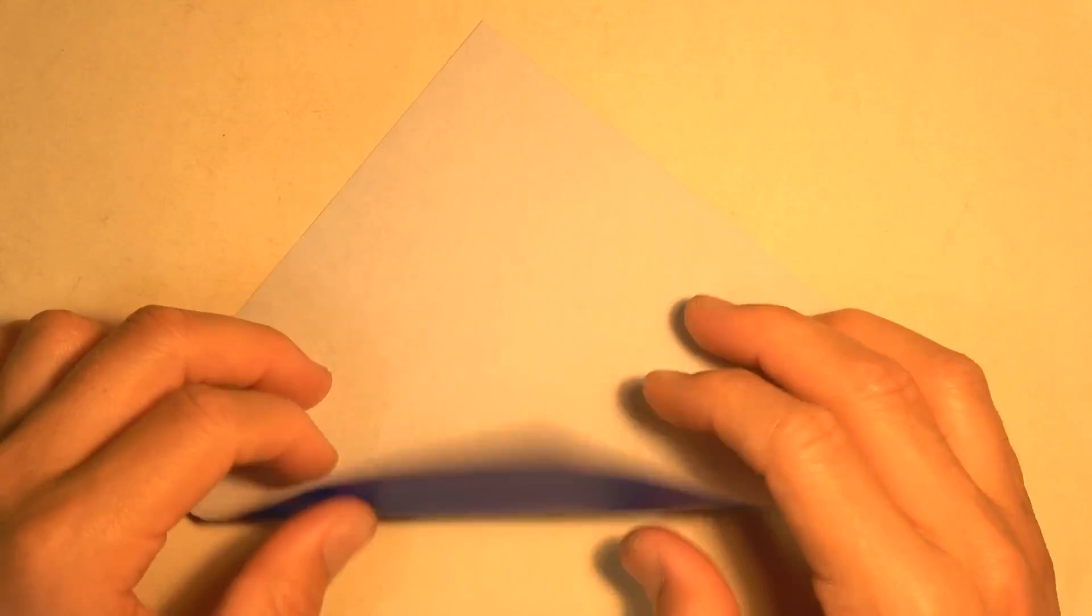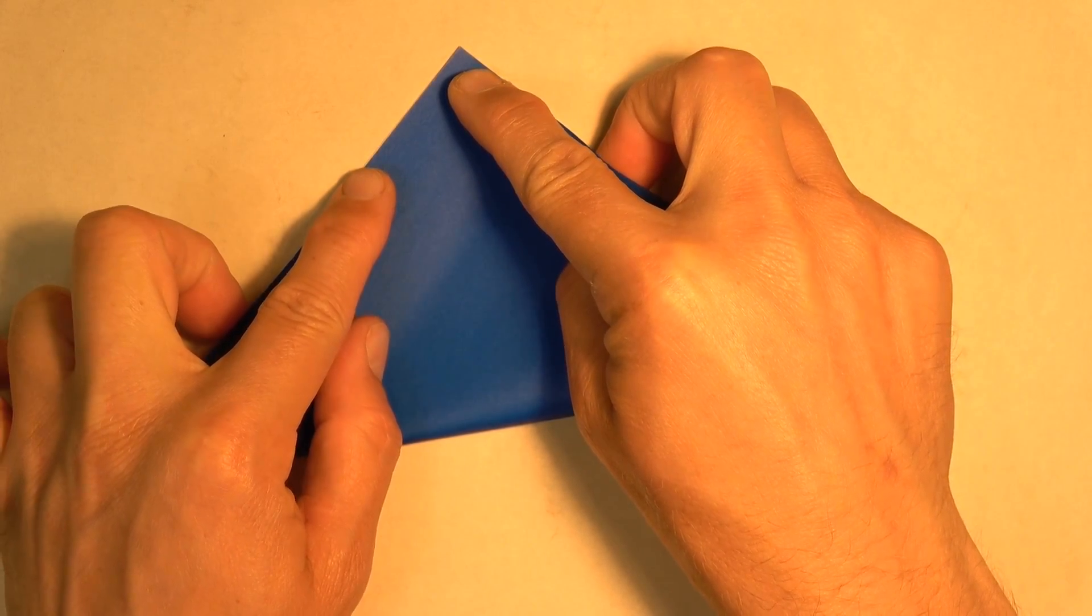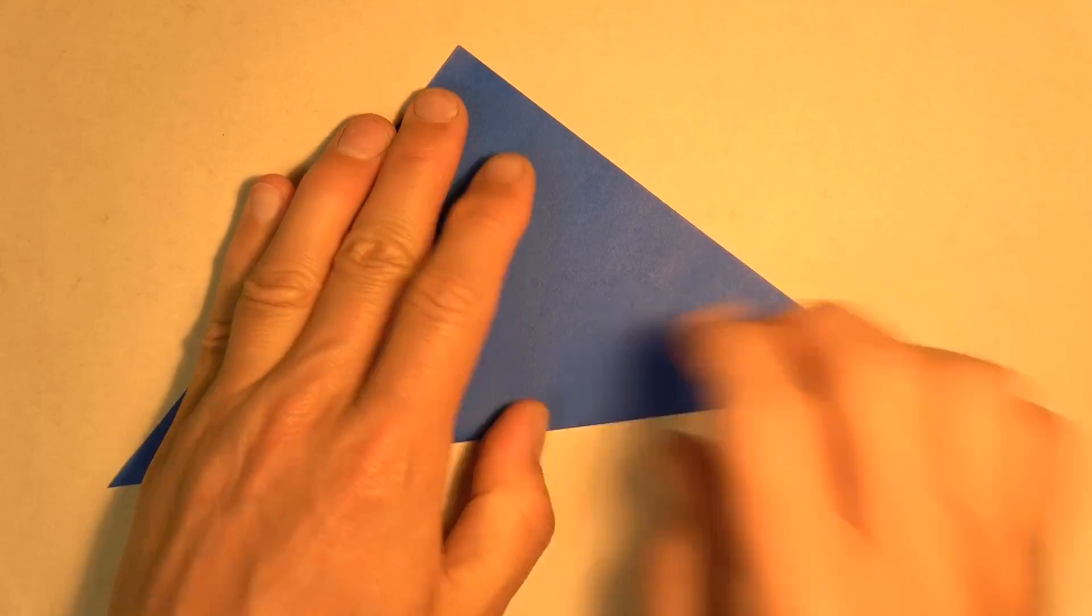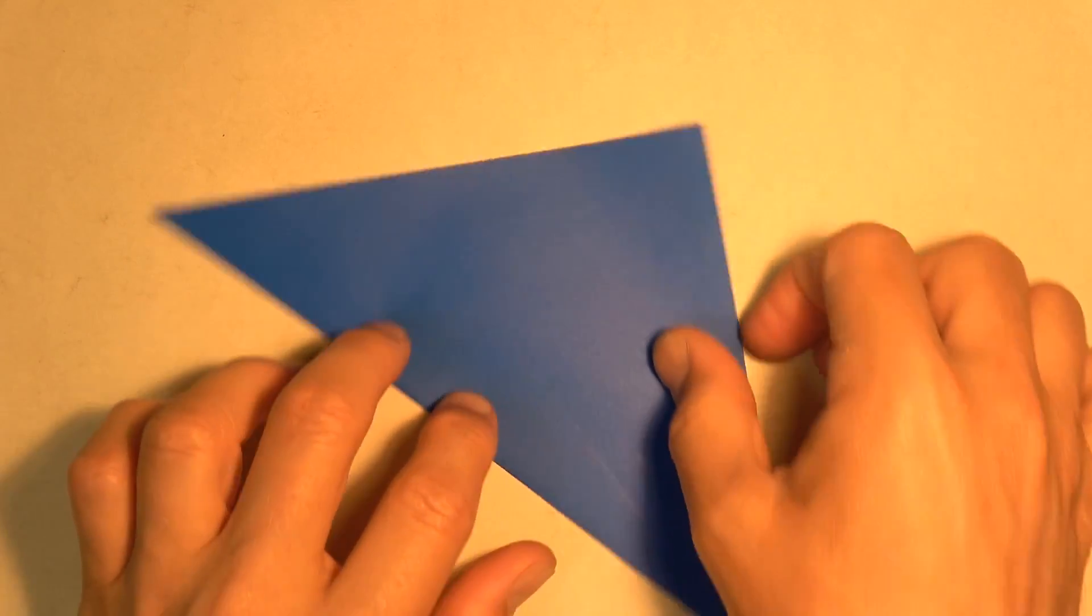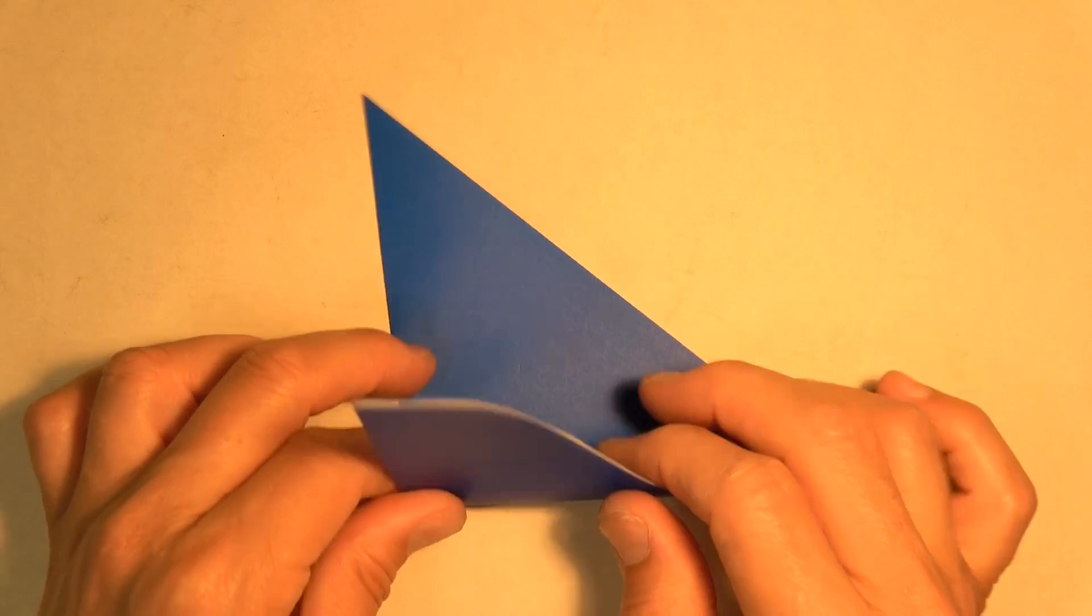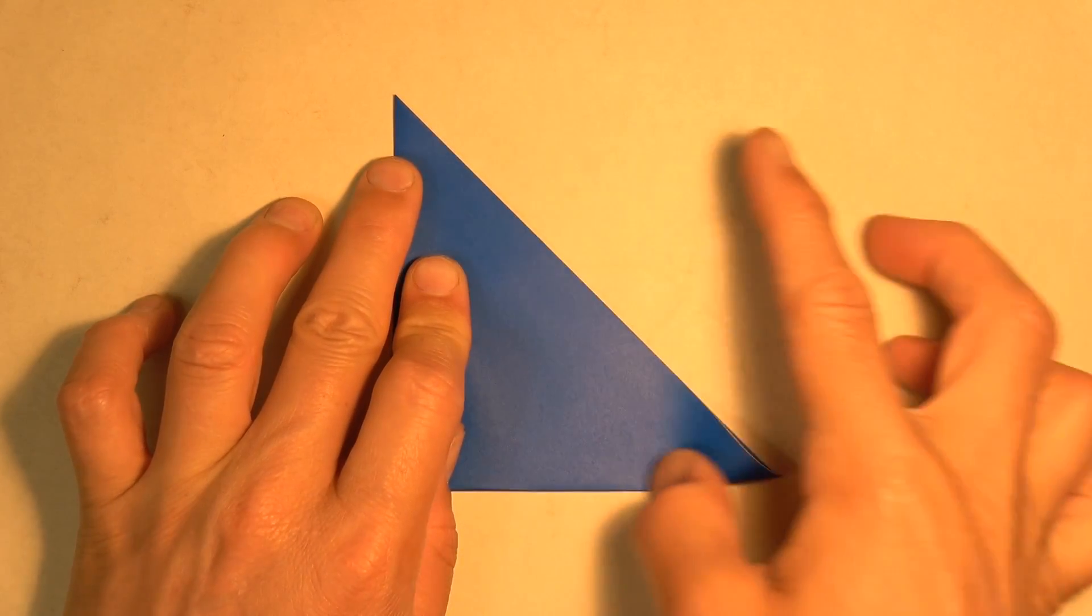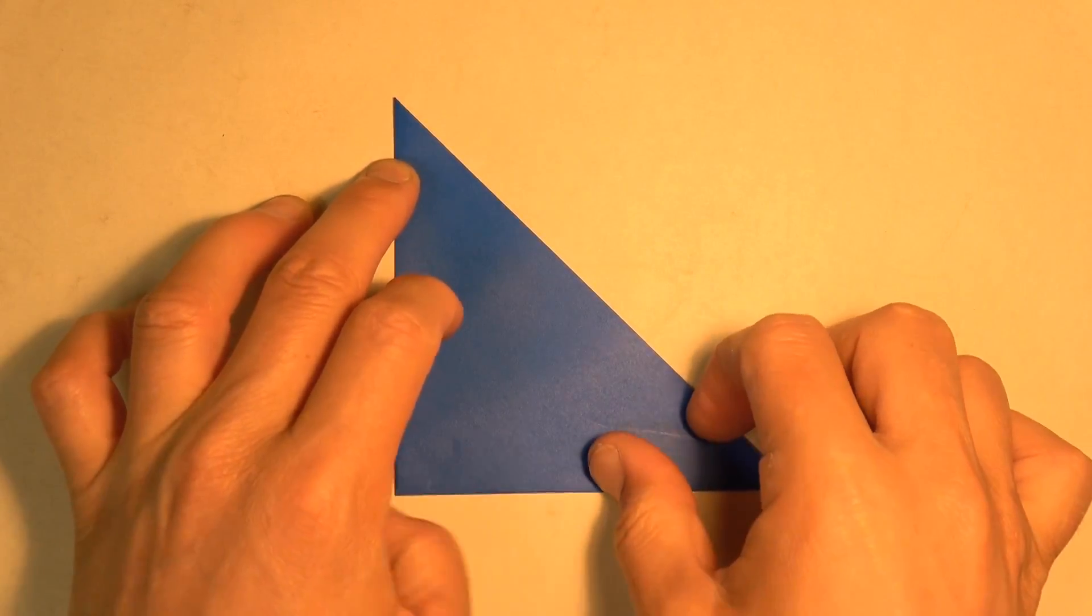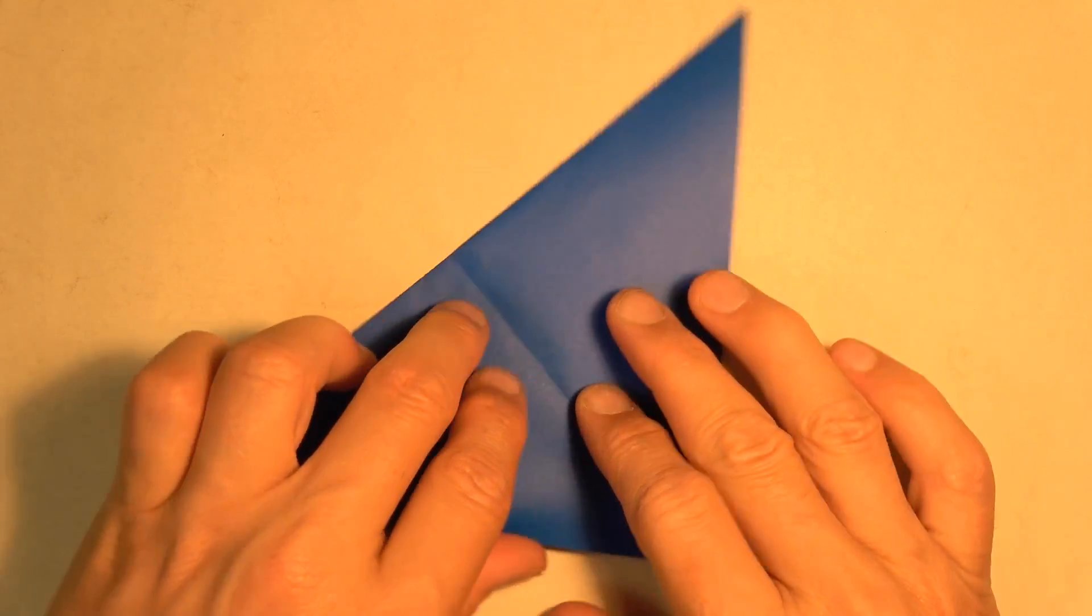Let's begin white side up and fold diagonally in half. Try to make really precise folds and crease sharply. Now let's rotate and fold in half in this direction. And unfold and rotate.